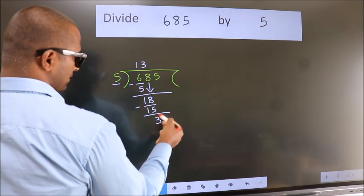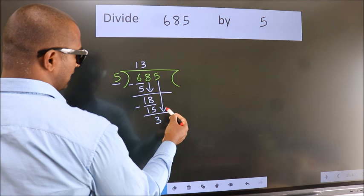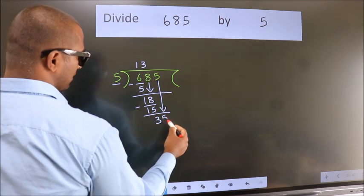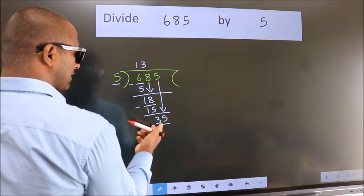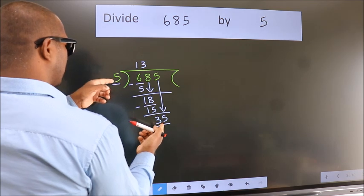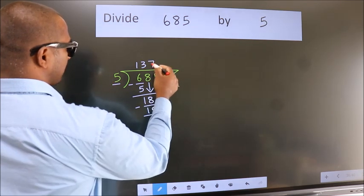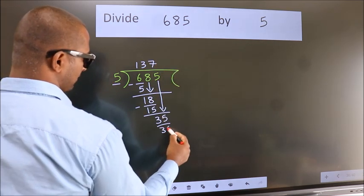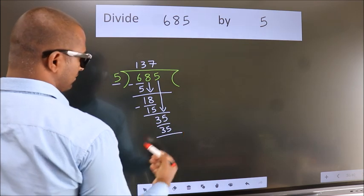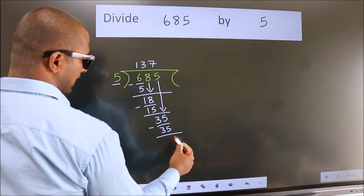After this bring down the beside number. So 5 down. So 35. When do we get 35? In 5 table. 5 sevenths 35. Now we subtract. We get 0.